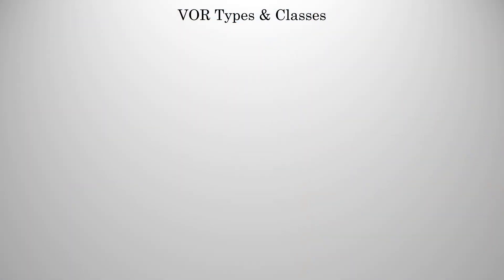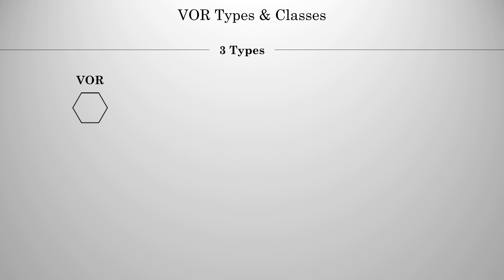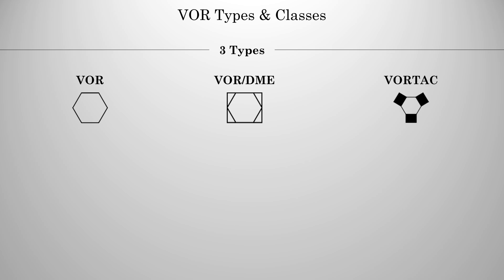Just like in VFR flying, there are three types of VORs: VOR, VOR with DME capability, and VORTAC, which has additional military uses, but for civilian use is similar to a VOR DME.